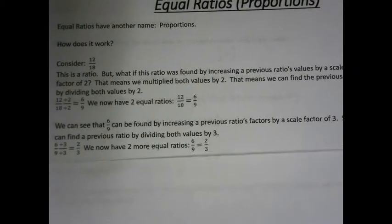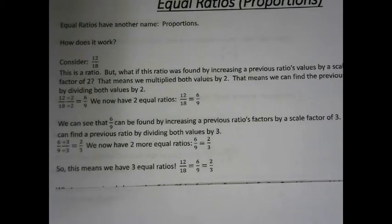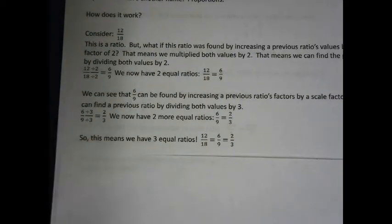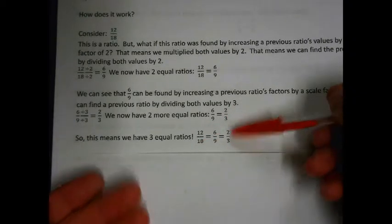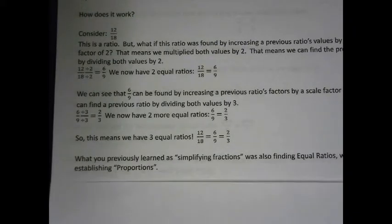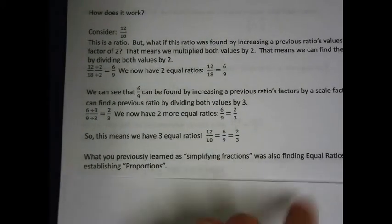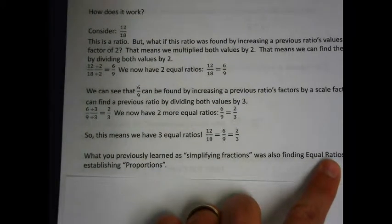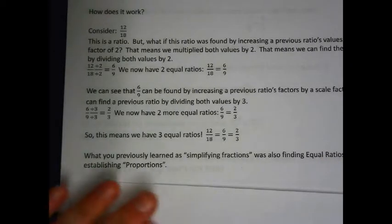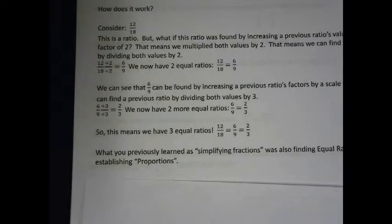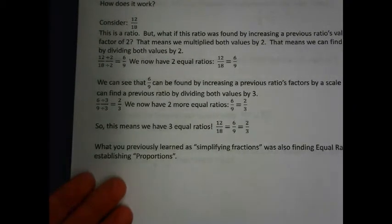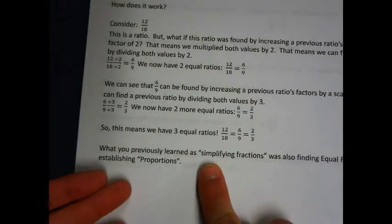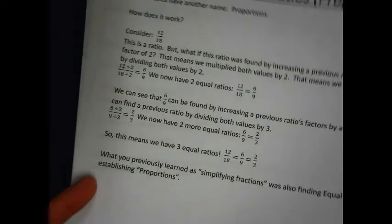So that's how proportions work. We actually have 3 equal ratios, and this is totally legitimate — it's just a fact of the universe. 12 to 18 is equal to 6 to 9, which is equal to 2 to 3. Those are all equal. Do you remember simplifying fractions? It's the same thing as finding equal ratios, and that was establishing proportions. What we're getting into is building on stuff we already know. We used to call it simplifying fractions — we were establishing proportions.